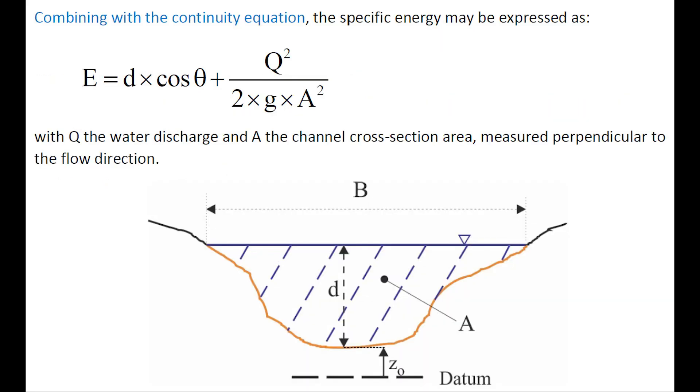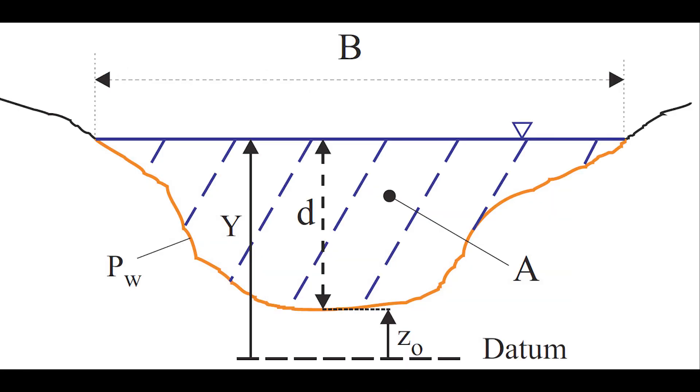Combining with the continuity equation, the specific energy may be expressed as shown here, with Q the water discharge, and A the channel cross-section area, measured perpendicular to the flow direction.